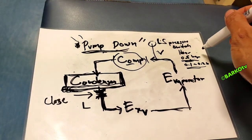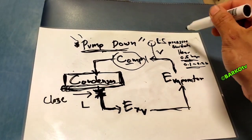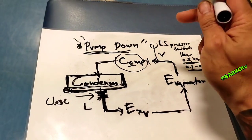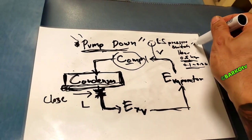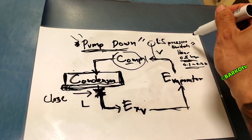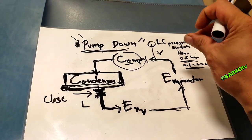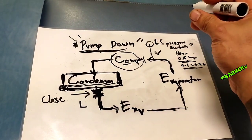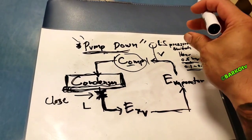To recap: this is the manual pump-down procedure. Simply close the isolation valve after the condenser to pump down your system and collect the refrigerant.